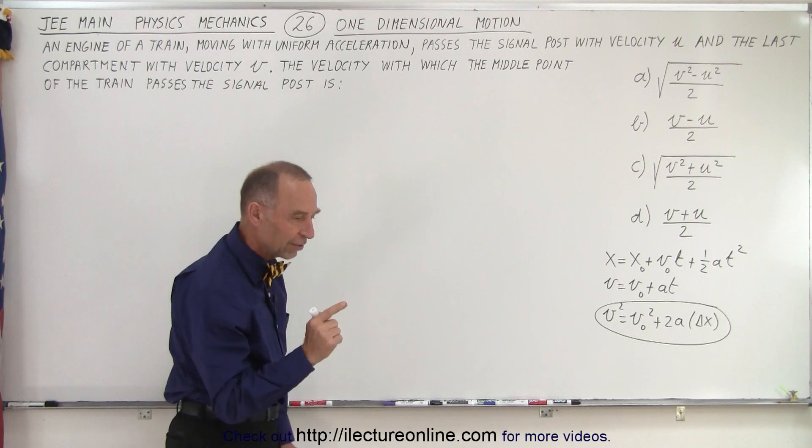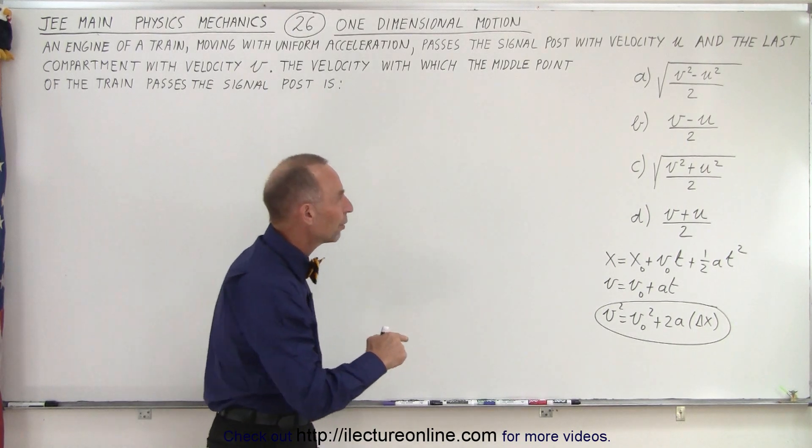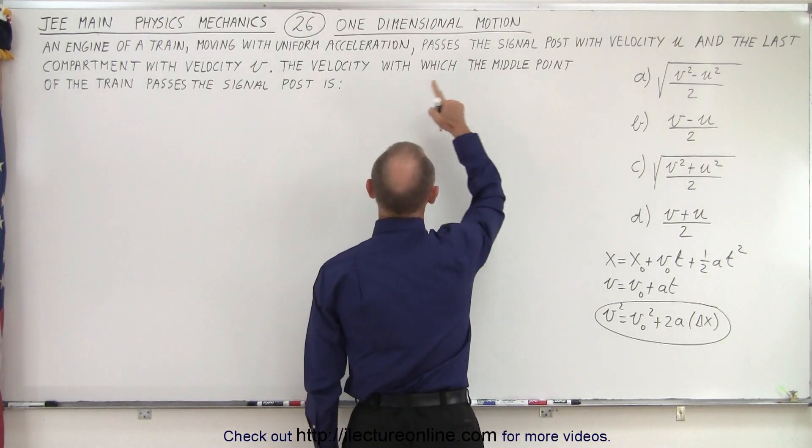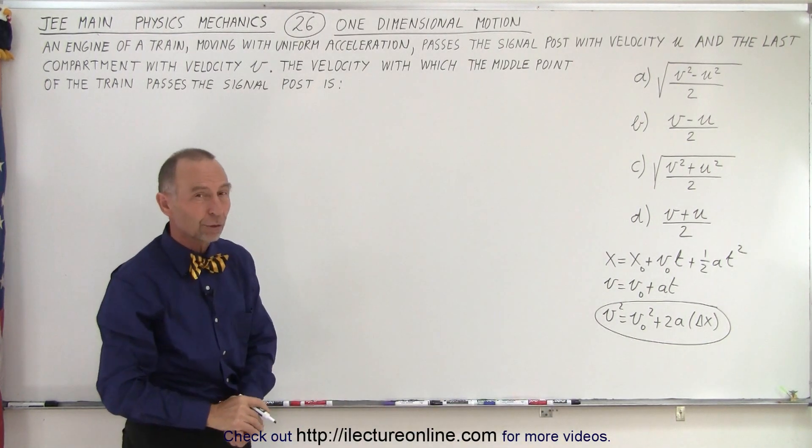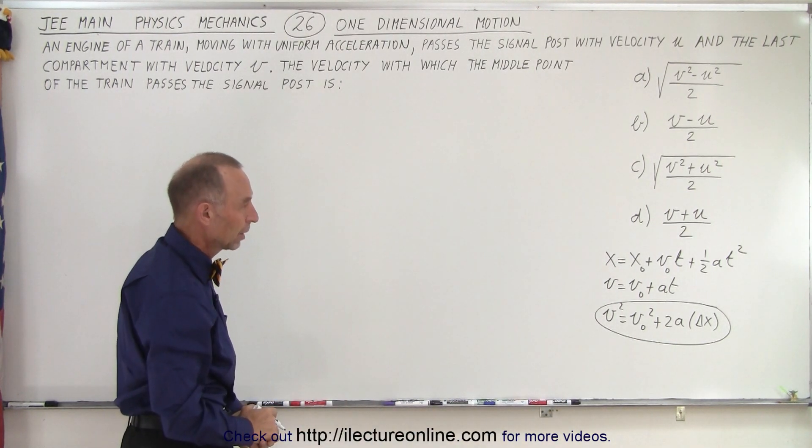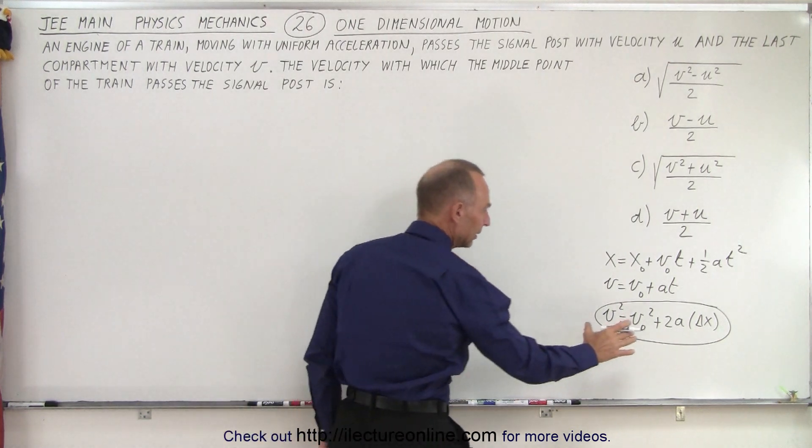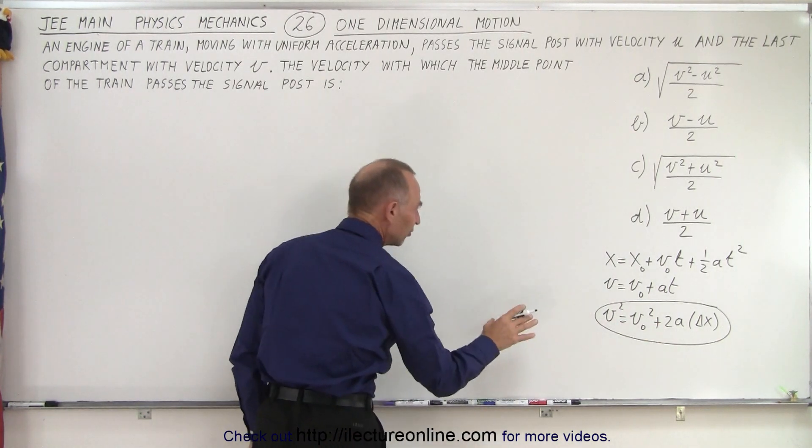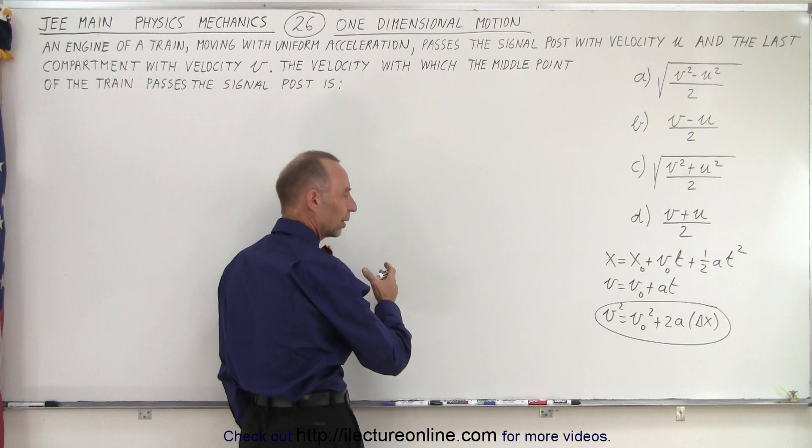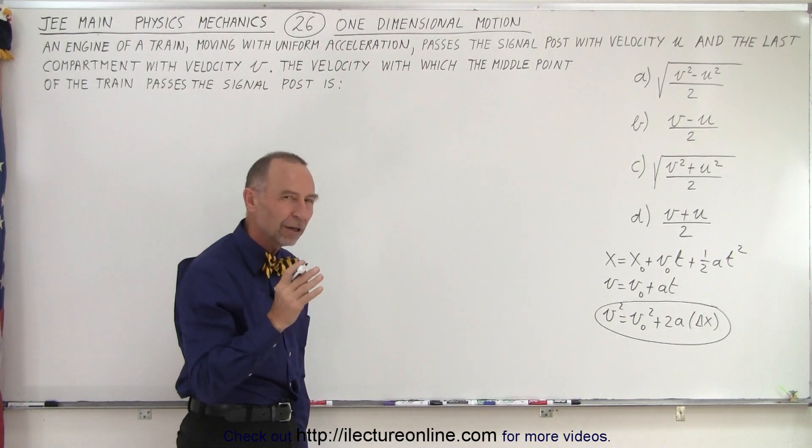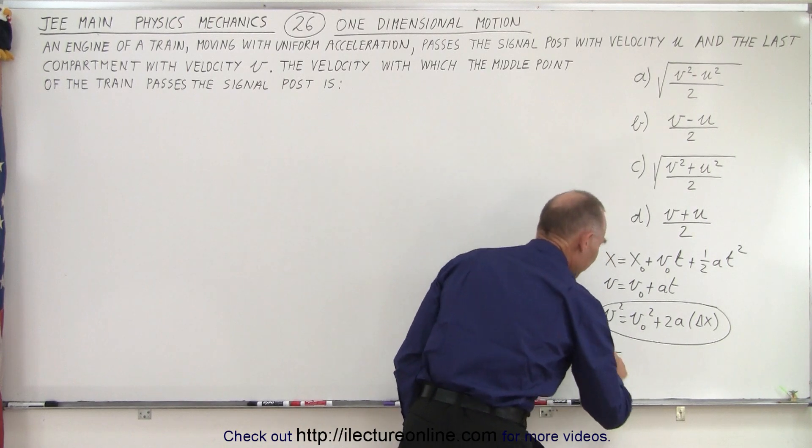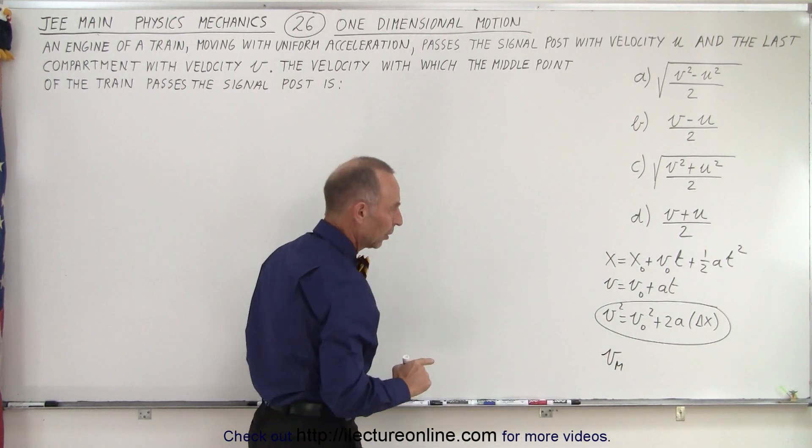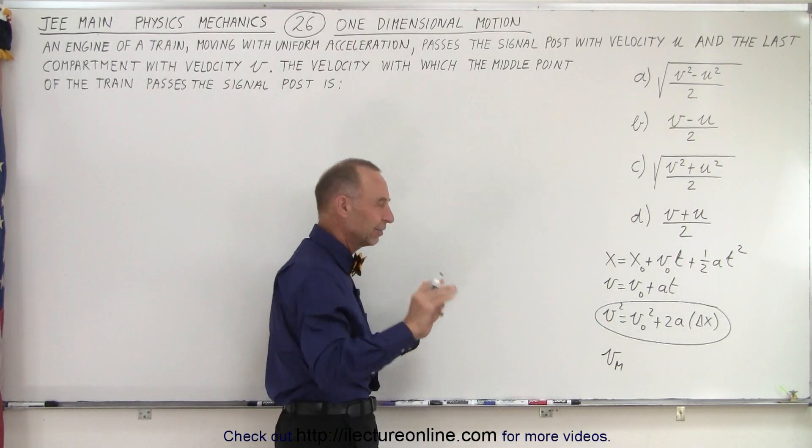Now, notice we're trying to find the velocity of the middle of the train with respect to the velocity of the beginning and the end in terms of v and u. And all the answers are, of course, in terms of v and u. So let's go ahead and apply this equation. So v squared, that's the final velocity squared. What we want to do now is the velocity in the middle. So let's use v sub-m as the velocity in the middle to help us out. So that would be the final velocity.